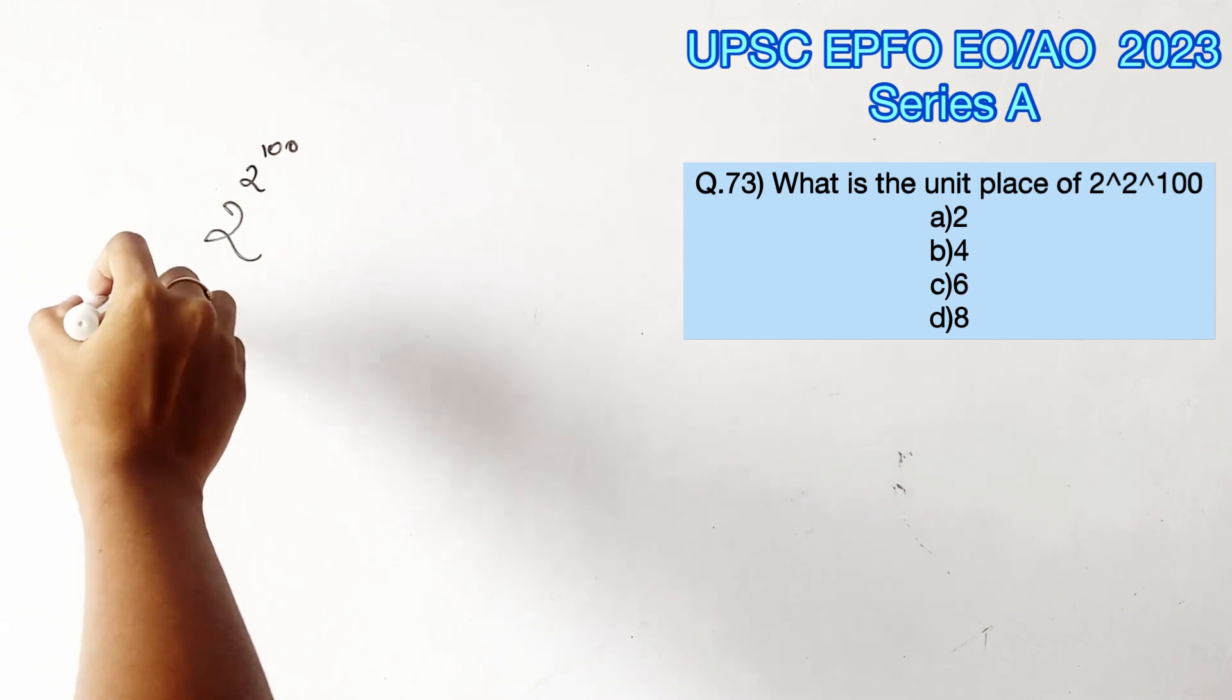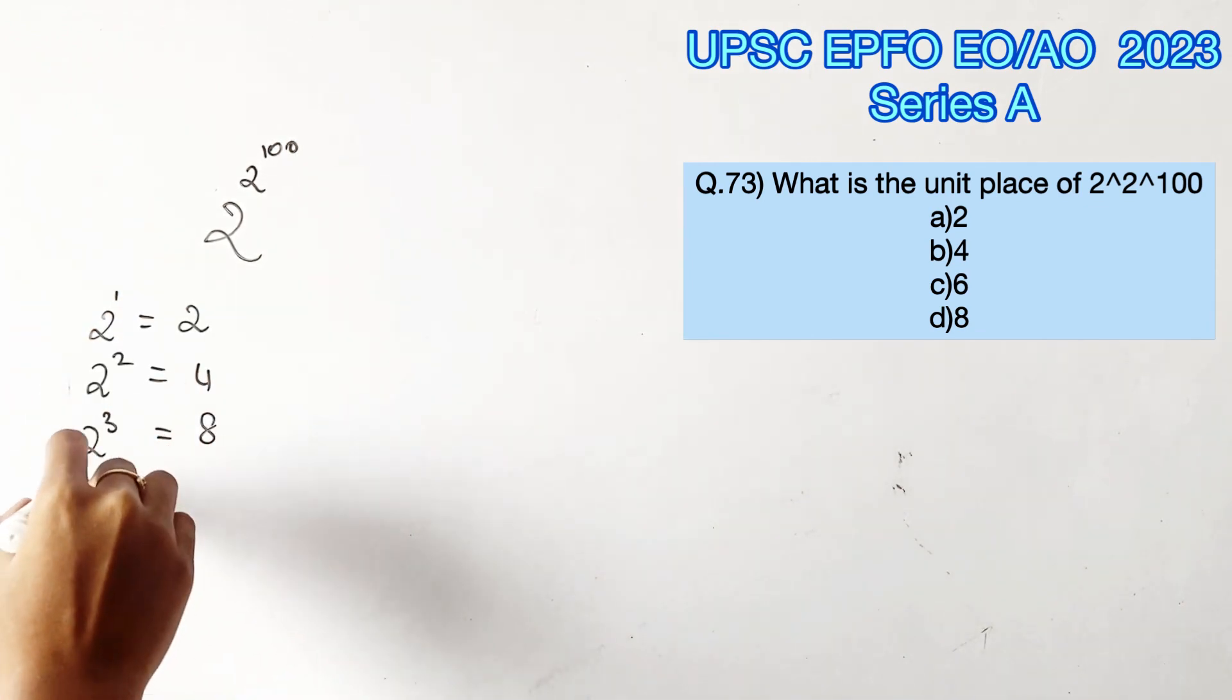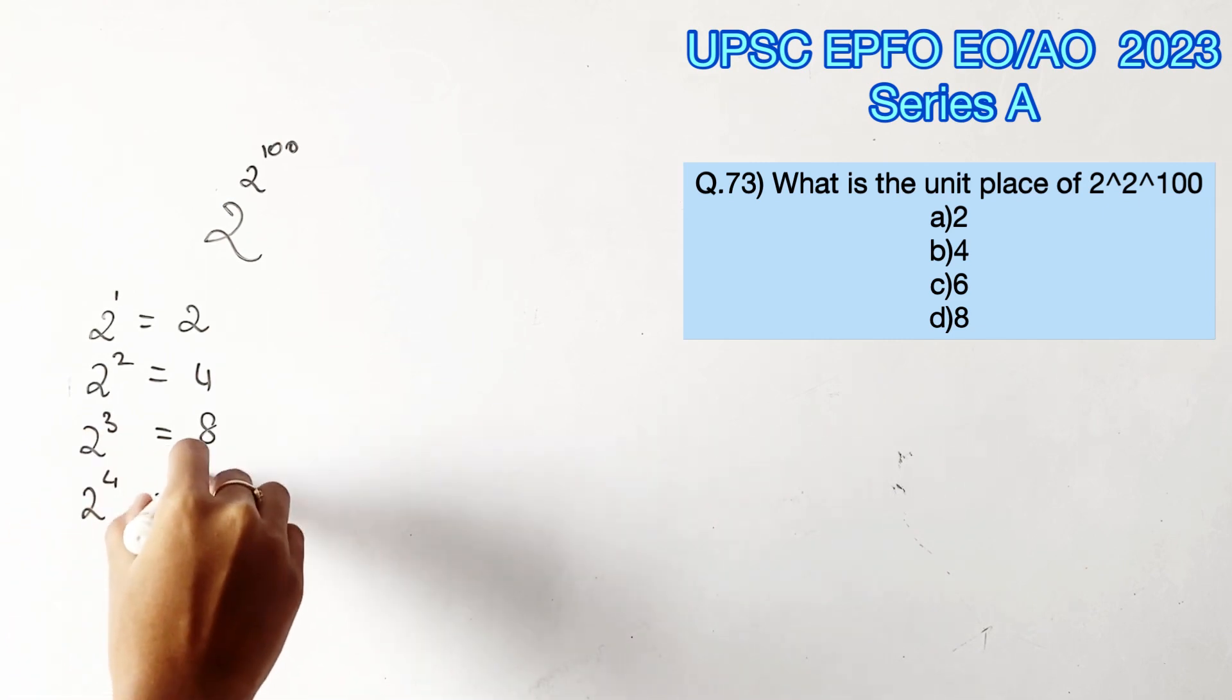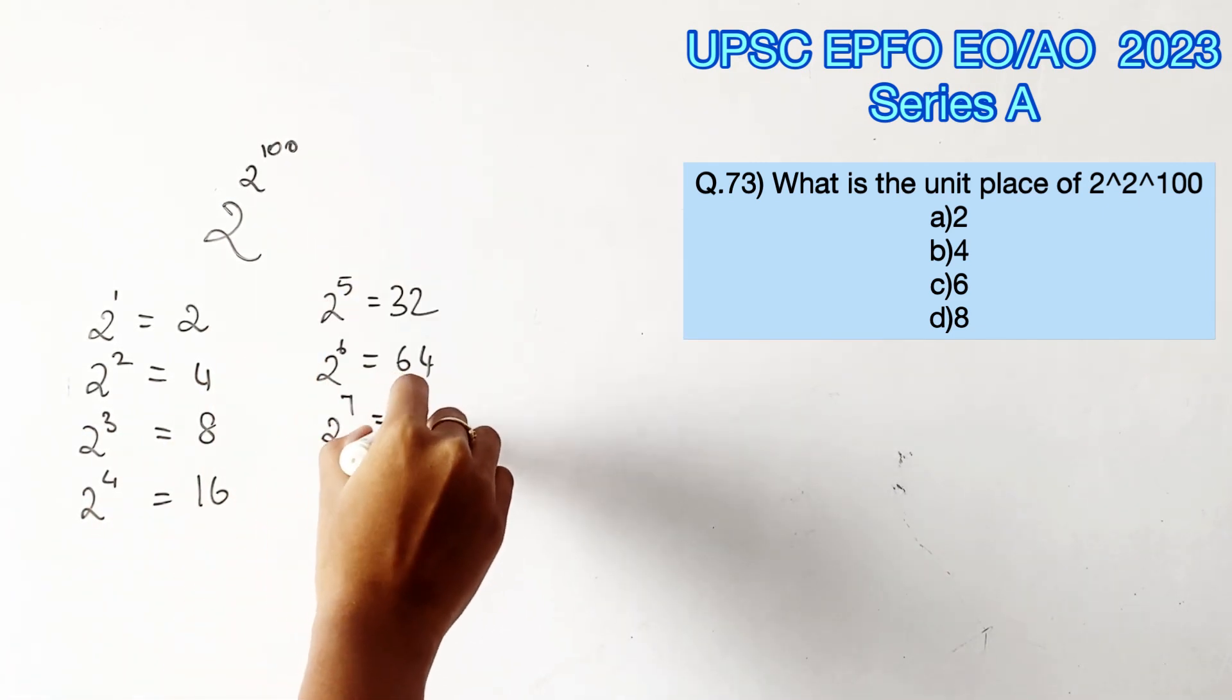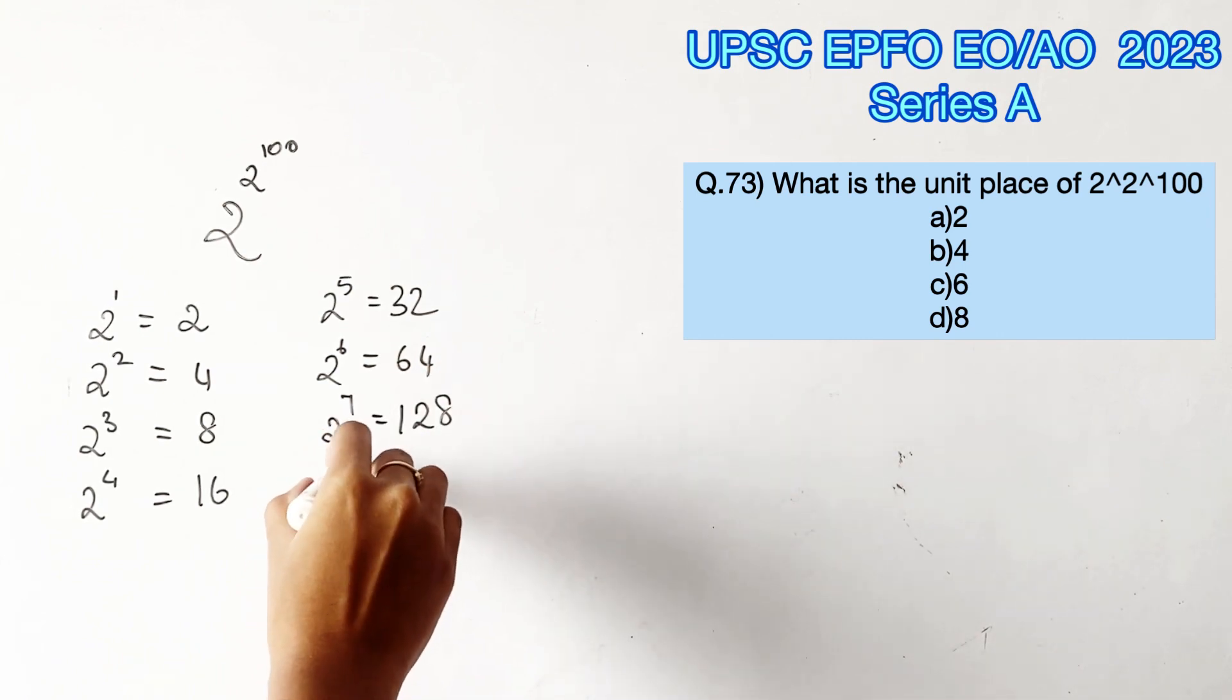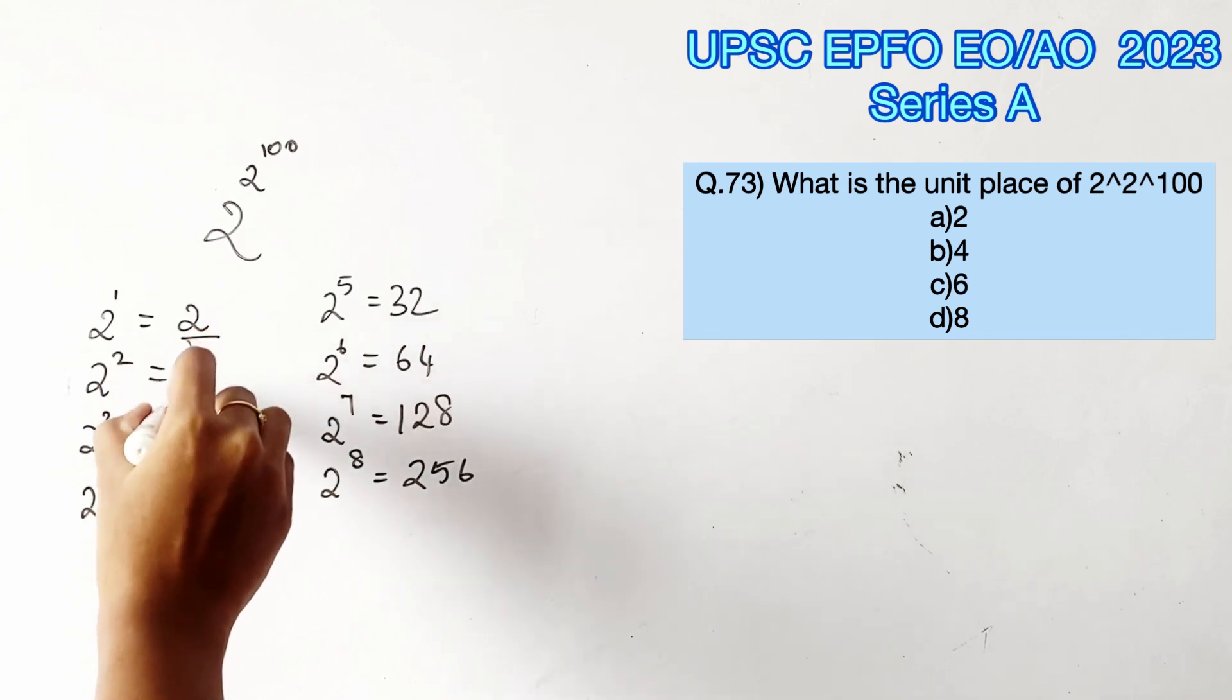Let us form a pattern while 2 is raised to different powers. 2 power 1 gives 2, 2 power 2 gives 4, 2 power 3 gives 8, 2 power 4 gives 16, 2 power 5 gives 32, 2 power 6 gives 64, 2 power 7 gives 128, and 2 power 8 gives 256.